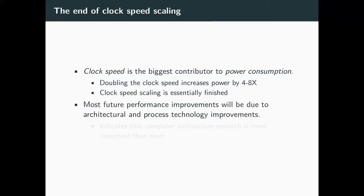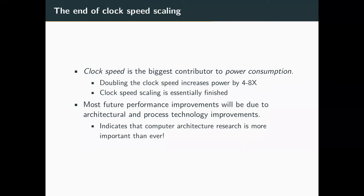So where do most future improvements come from? Two places: first, architectural improvement — which is what this class cares about — and second, process technology improvements, which is not as much the focus but we'll touch on it. Process technology meaning the actual process of manufacturing the various components. It's very important that we research this stuff, or else we can say goodbye to performance gains.